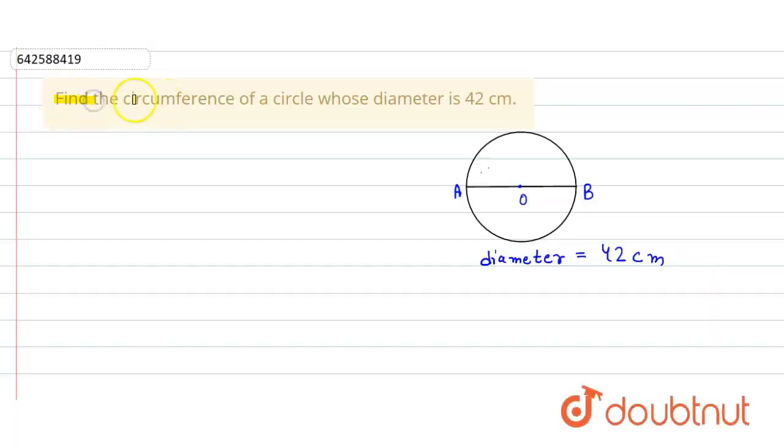In the given question, we have to find the circumference of a circle whose diameter is 42 centimeters. So here in this circle, the diameter is AB. This complete length equals the diameter of the circle.